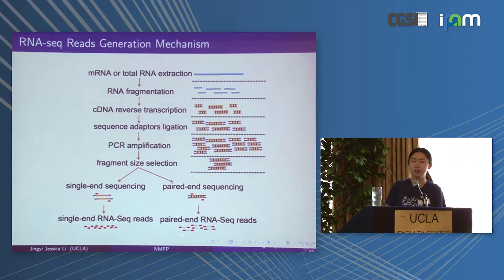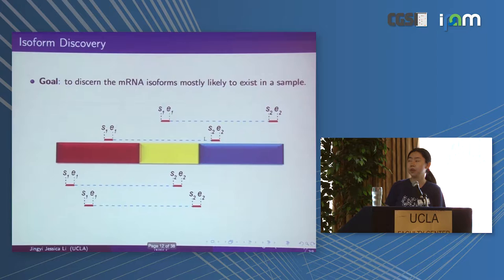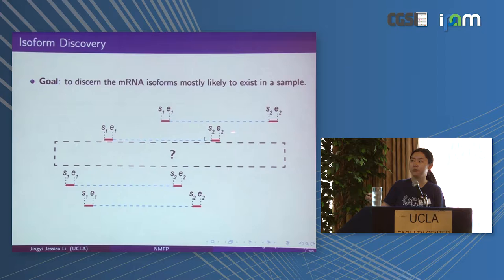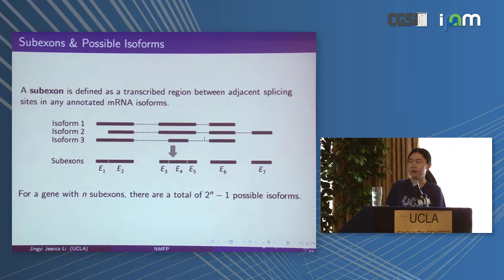What we observe are paired-end RNA-seq reads and what we want to recover is the full-length mRNA transcript we started with. To summarize, the isoform discovery problem can be illustrated as follows: suppose we have an mRNA isoform with three exons — the red is the first exon, yellow the second, blue the third — and from this transcript those paired-end reads are generated. In reality we only observe this data, not the mRNA transcript, so how do we recover it?